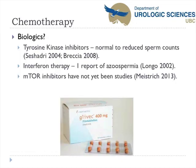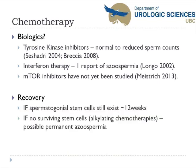With biologics, there isn't a lot of evidence as they are fairly new. Tyrosine kinase inhibitors sometimes decrease sperm counts in one study, while another found normal sperm counts following treatment. Interferon therapy had one case report of azoospermia, and mTOR inhibitors do not appear to have any literature on fertility at this point. Recovery depends on whether the spermatogonial cells have been damaged: if damaged by alkylating agents like cisplatin, there may be no recovery of spermatogenesis.